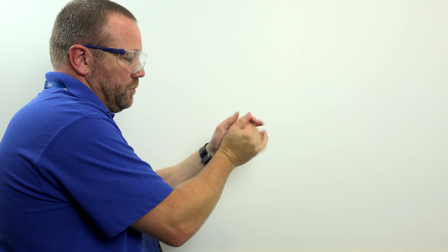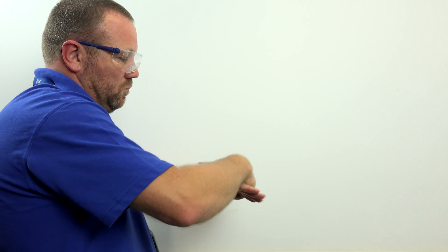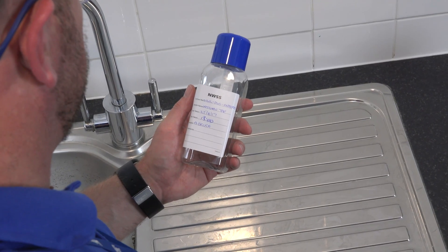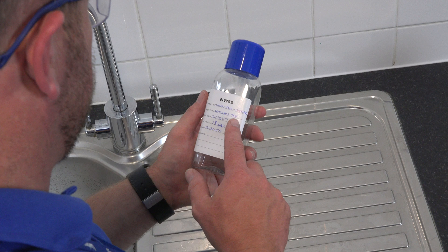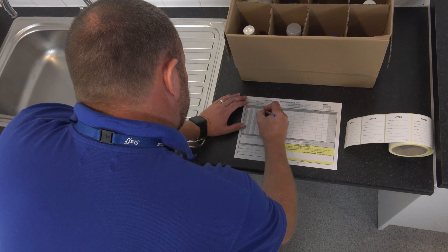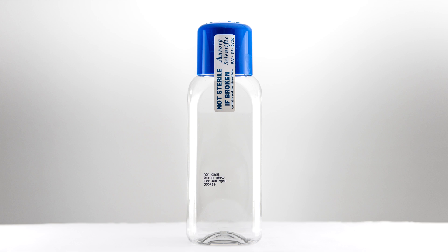Before taking any microbiological samples, you should thoroughly clean your hands with antimicrobial hand cleaner. You can then take the bottles supplied by your laboratory and confirm that they have been clearly labelled with the correct sample details. These details should match those entered onto the sample submission sheet that will accompany the bottles to the laboratory. You should also check that the bottle's security seal is intact and that the bottle has not exceeded its expiry date.